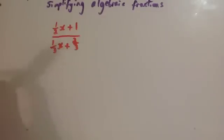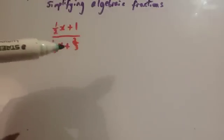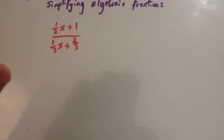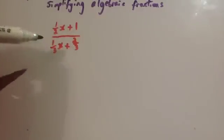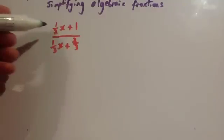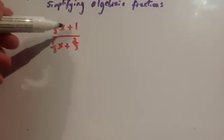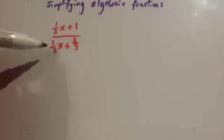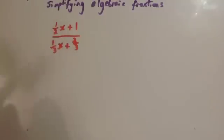Our last example is to simplify one half x plus 1 over one third x plus two thirds. Looking at this, it doesn't look as obvious that it can factorise. The thing I'd focus on is that I don't really like the coefficients of x — you've got a half and a third. Let's make these into integers. On a fraction, if you multiply the top and the bottom by the same number, it'll still be an equivalent fraction. Multiplying by 2 would work for the top line giving x plus 2, but not for the bottom — it would give two thirds x plus four thirds. So you'd need a different number.